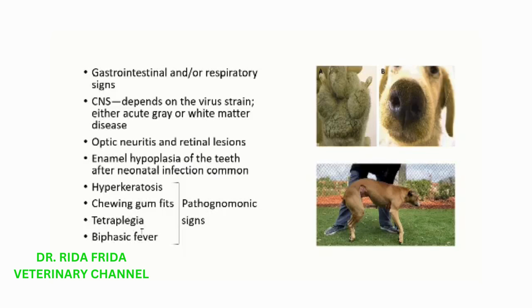Enamel hypoplasia of the teeth is seen in canine distemper. Some important pathognomonic lesions of this disease include hyperkeratosis, which includes the hardening of foot pads and nose of the animal, chewing gum fits, and metaplasia.